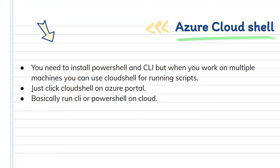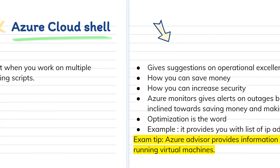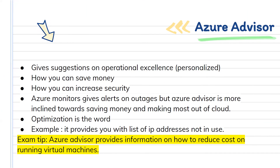Since Azure Cloud Shell is a virtual CLI or PowerShell, you can use it on any device. You just have to log into the browser, go to Azure Portal, and from there you can use Azure Cloud Shell — no download or configuration of PowerShell or CLI is required.